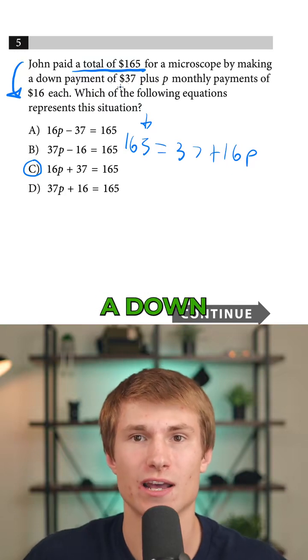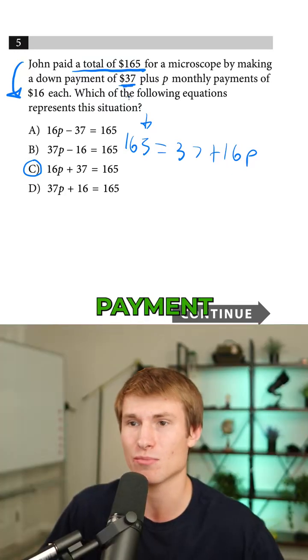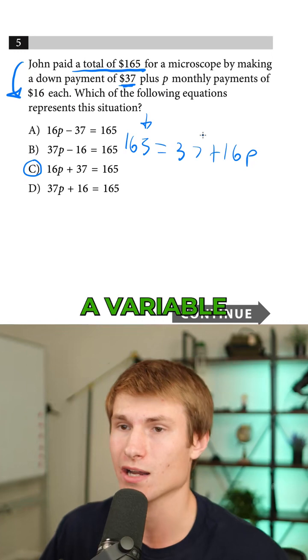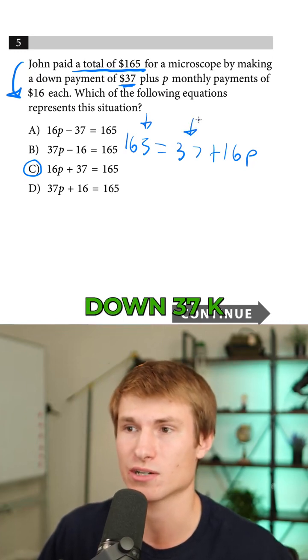Then as I kept reading, I saw I had a down payment of $37. A down payment is a one-time payment, so there's not going to be a variable next to it. So I went ahead and wrote down $37.